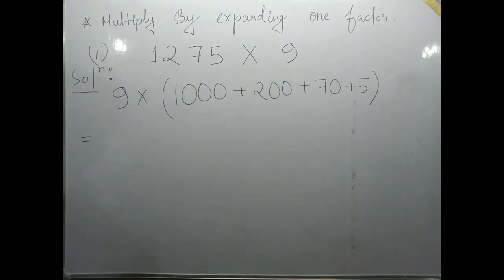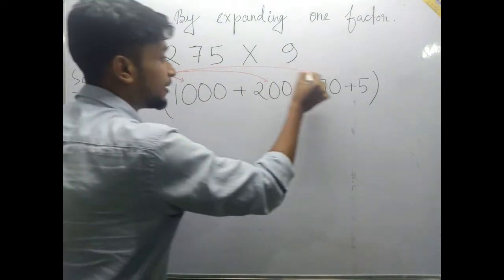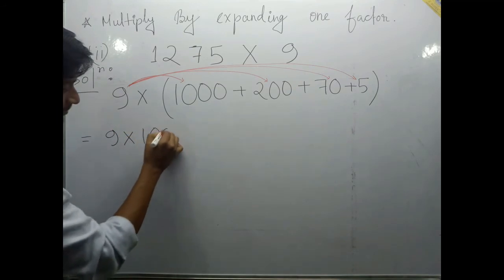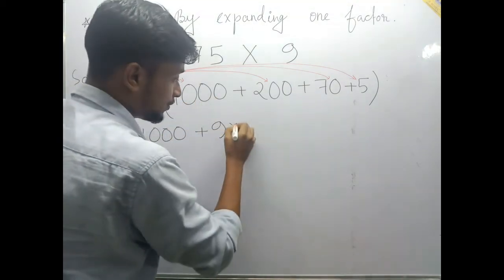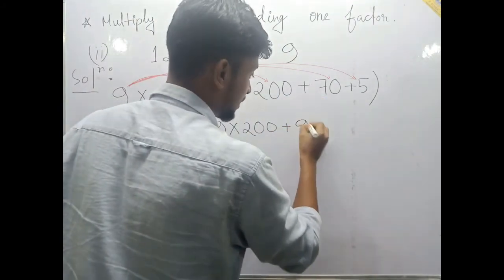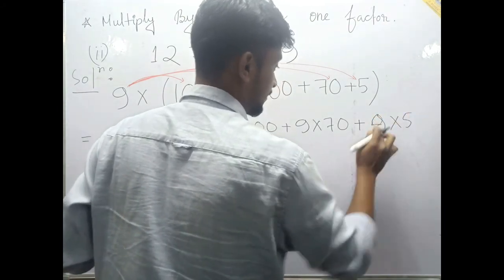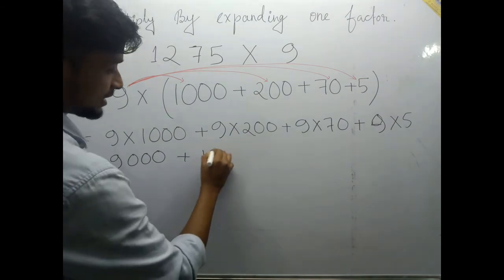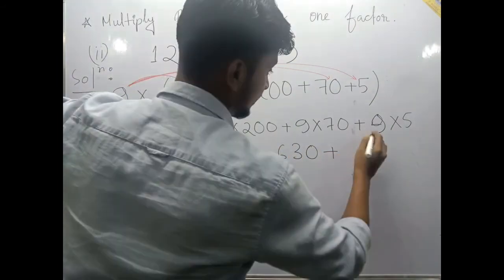Then we will distribute this 9 with every element inside this bracket. We have to distribute this 9 with all the numbers inside the bracket. 9 into 1000, 9 into 200, 9 into 70, 9 into 5. 9 into 1000 means 9000, 9 into 200 means 1800, 9 into 70 means 630, and 9 into 5 means 45.